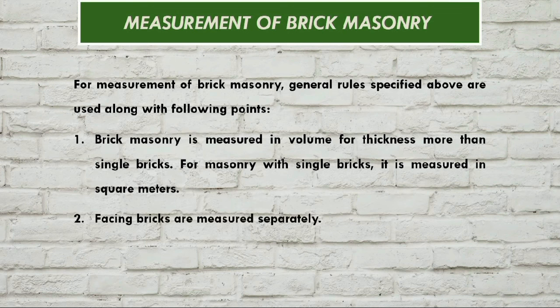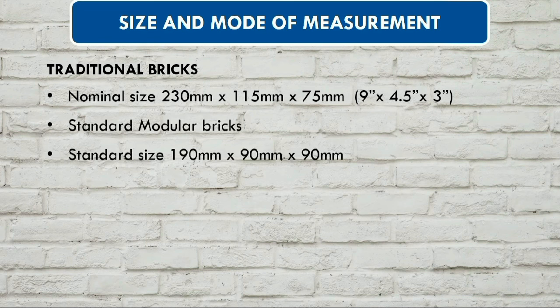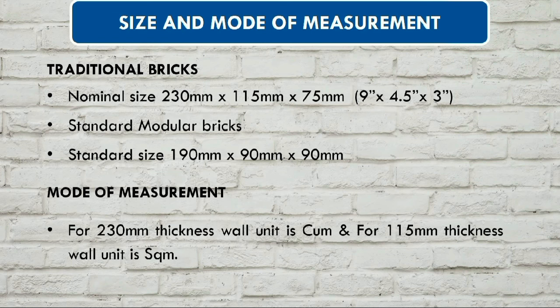The facing brick is measured separately. The size of a traditional brick is 9 inches by 3.75 inches by 3 inches, or 230 mm by 115 mm by 75 mm. Standard modular brick size is 190 mm by 90 mm by 90 mm. Mode of measurement: 230 mm thickness wall is measured in cubic meters, and 115 mm thickness is measured in square meters.